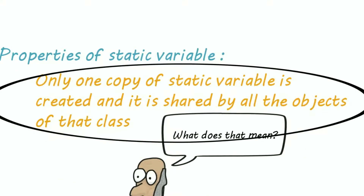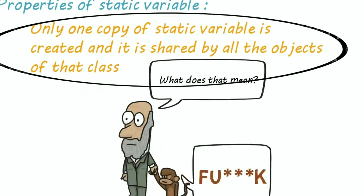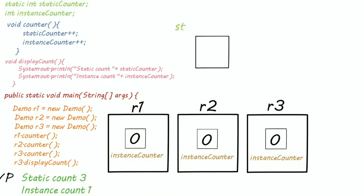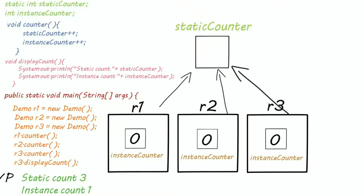Let's understand why this happened. According to our definition, only one copy of a static variable is created and it is shared by all the objects. This means static counter is created only once in memory and all the objects can access that variable. When r1 calls the counter method, the instance variable is incremented by one and the static variable is incremented by one.